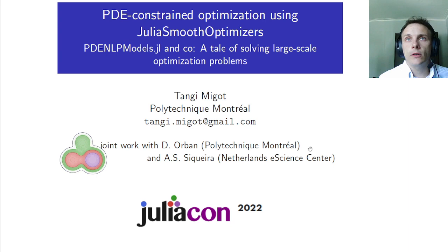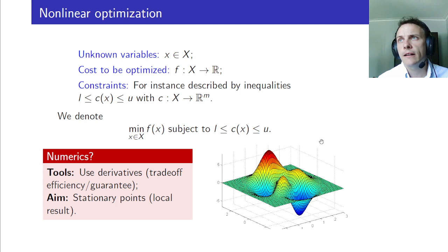So let's get started. What I'm generally interested in is algorithms for nonlinear optimization. Typically, we'll have unknown variables x, a cost function to be optimized, and constraints, either as inequalities or equations. Our goal is to compute local minima or stationary points with algorithms using derivatives, as I believe it's a good trade-off between optimality guarantee and numerical efficiency.